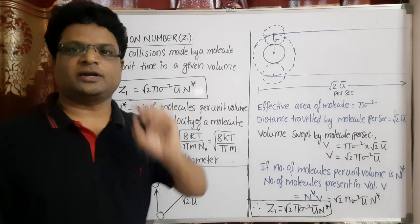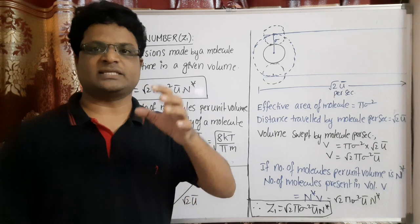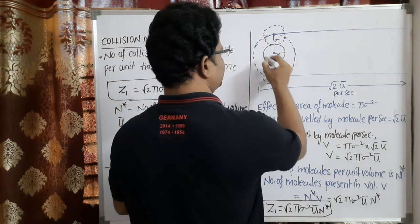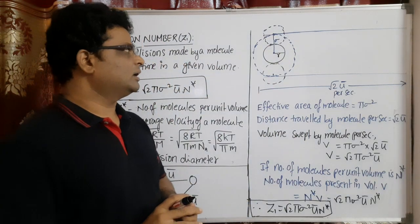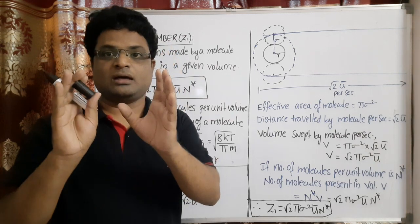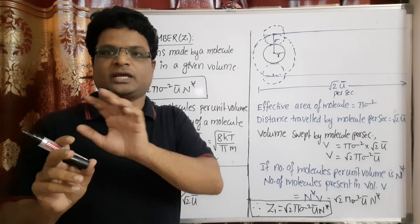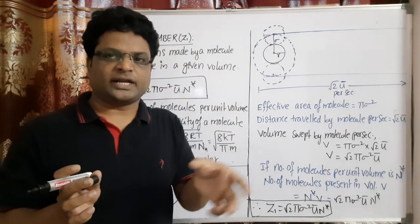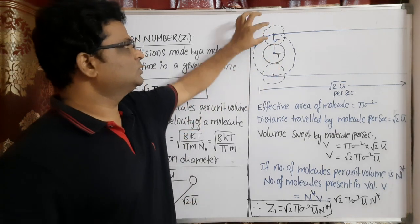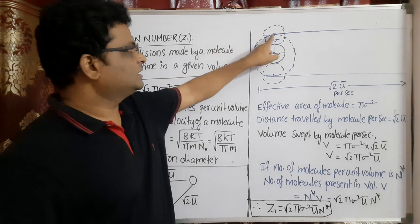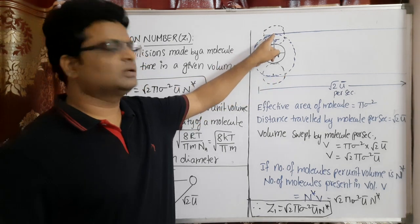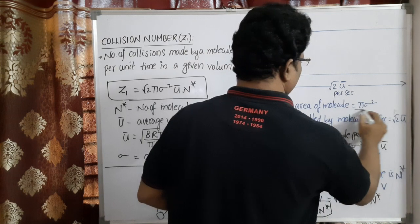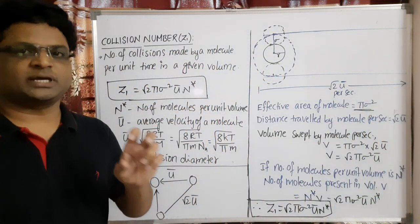The effective area covered by a gas molecule while moving is not π r², it becomes π σ², where σ is the collision diameter. If the normal cross-sectional area of a molecule is π r², the actual effective area is the area into which the center of another colliding molecule can approach. The center of the other colliding molecule can approach up to a distance σ but not closer. So the effective area covered by a gas molecule involved in a collision is π σ².